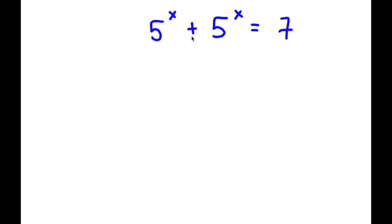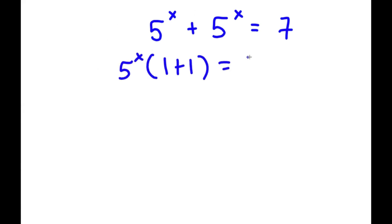In this problem, I have 5 to the power of x plus 5 to the power of x is equal to 7. The first thing I'm going to do is factor out 5 to the power of x from my left-hand side. So now I have 5 to the power of x times 1 plus 1 is equal to 7. 1 plus 1 is 2, so I have 5 to the power of x times 2 is equal to 7.